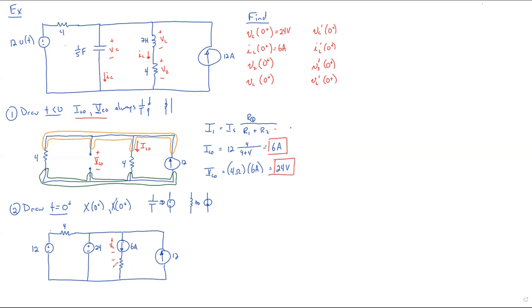But we're asked to find not only Vl, but we're also asked to find V2. We're also asked to find Vc. And we're also asked to find Il. All at zero plus, both primed and unprimed.